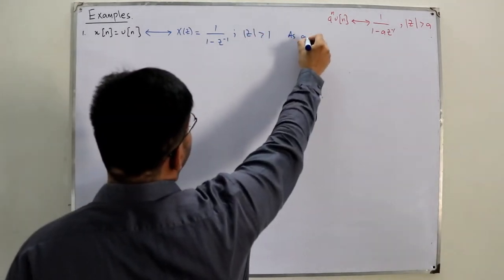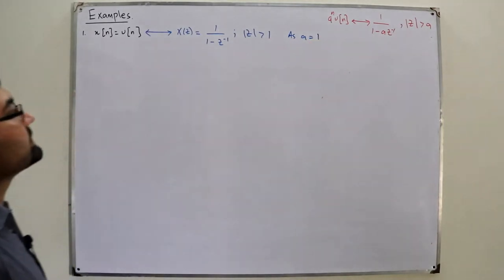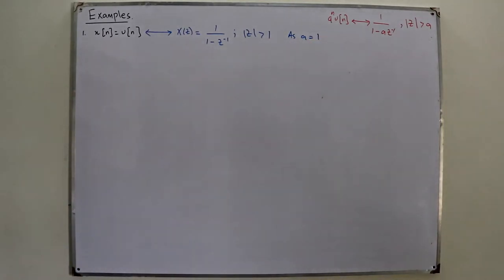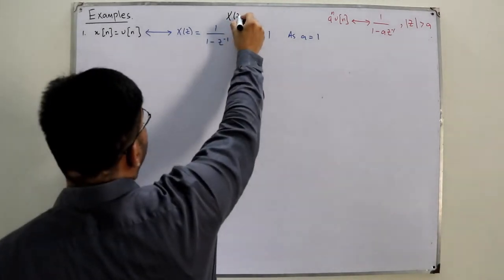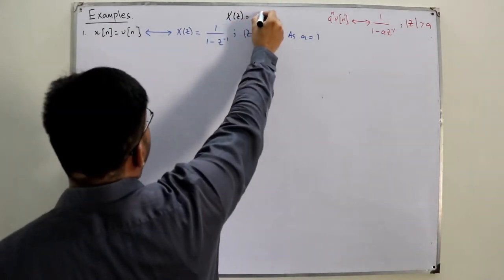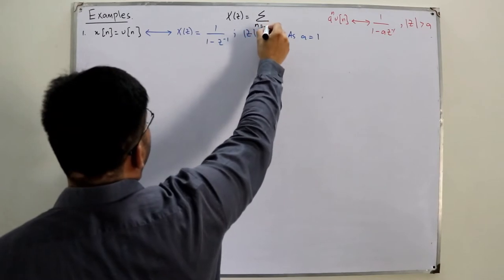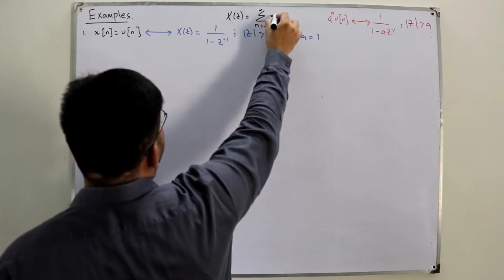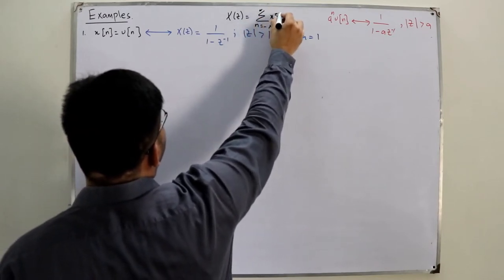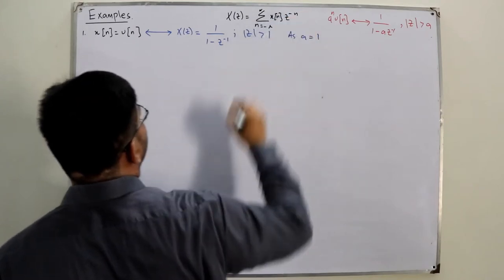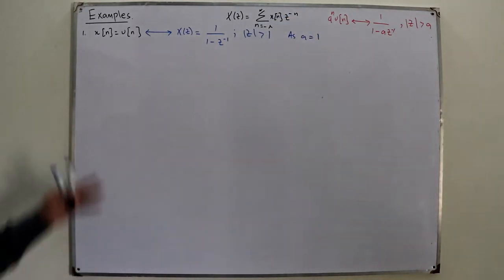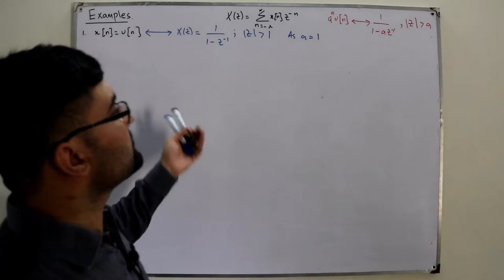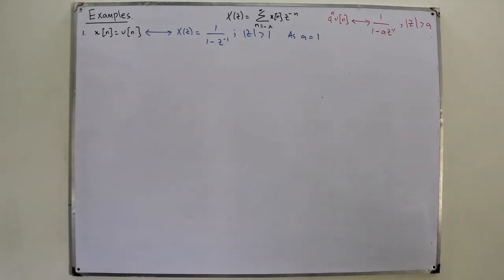Because a is equal to 1 in this case. Or you can use the standard formula: X(z) = summation n from negative infinity to positive infinity of x(n) · z^(−n). I wrote it directly, but you could also derive it using this formula.